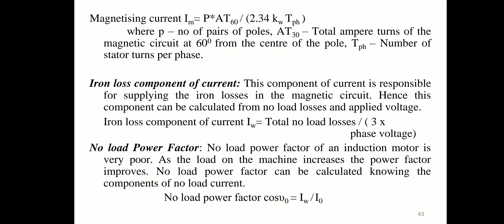Magnetizing current: Im = (p × AT60) / (2.34 × Kw × Tph), where AT60 is the total ampere turns of the magnetic circuit at 60° from the center of the pole, and Tph is the number of stator turns per phase. The iron loss component Iw supplies the iron losses in the magnetic circuit: Iw = total no-load losses / (3 × phase voltage). The no-load power factor of an induction motor is very poor; it improves as load increases.